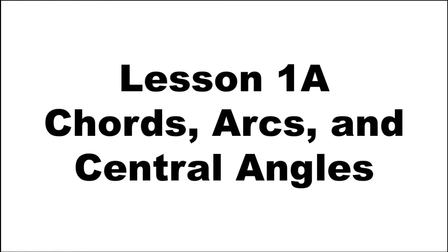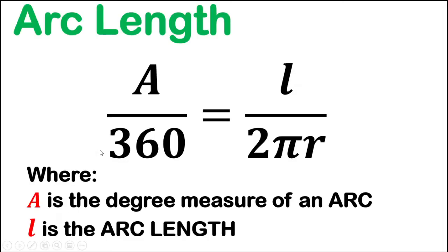We will now continue discussing the last two topics about lesson 1a, which is all about chords, arcs, and central angles. Let's begin with arc length. When you say arc length, it is the distance between two points along a section of the circumference of the circle. So do not be mistaken.